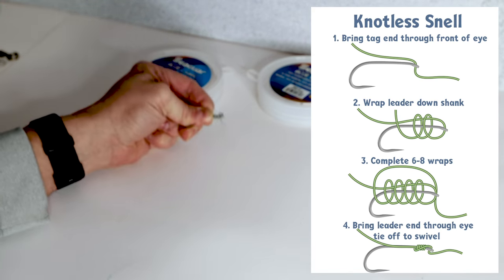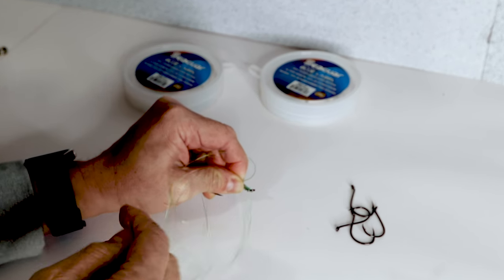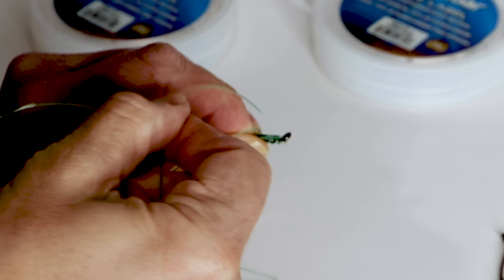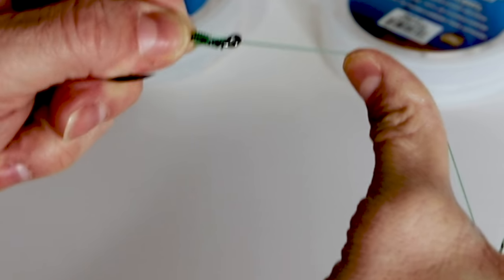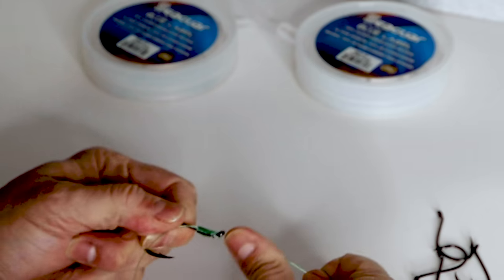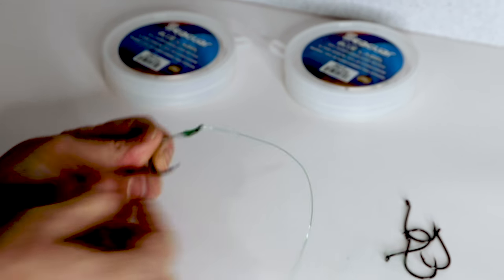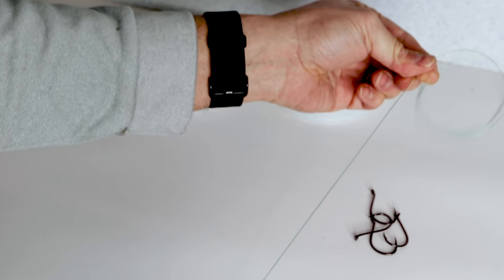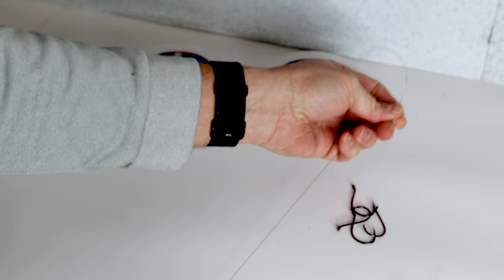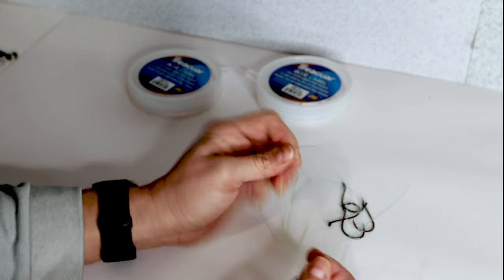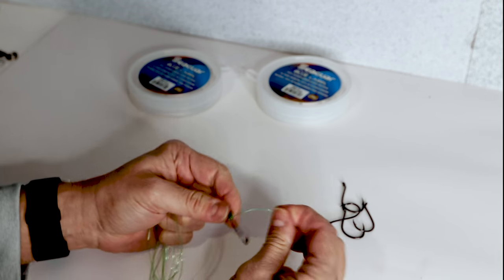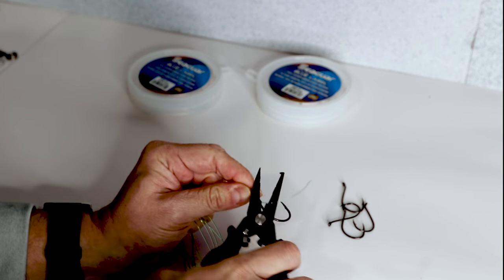And then with your tag end on your leader side, you're going to bring that from the shank side through the eye of the hook. You're going to cinch that down. And then this becomes your leader material. I would go directly to a barrel swivel. Flip your tag end. There you have it. It's essentially a knotless snell.